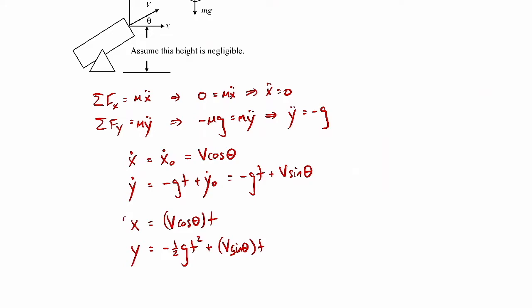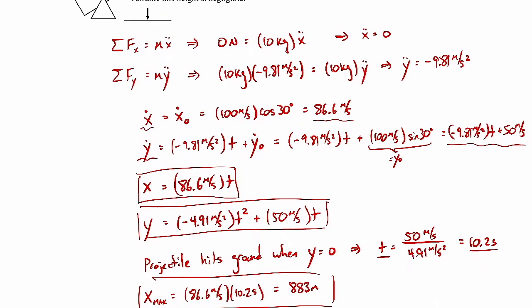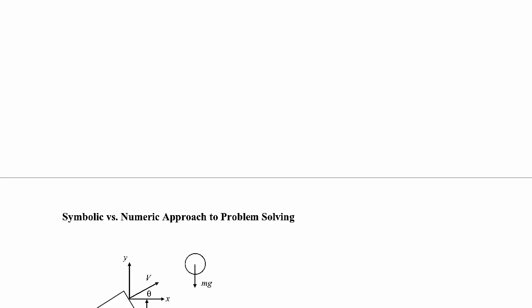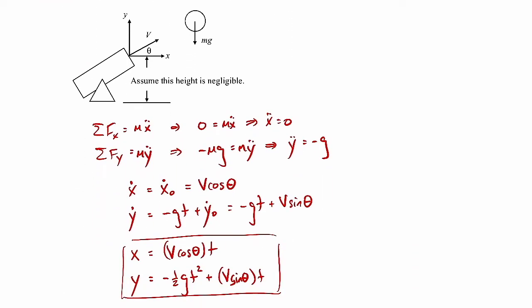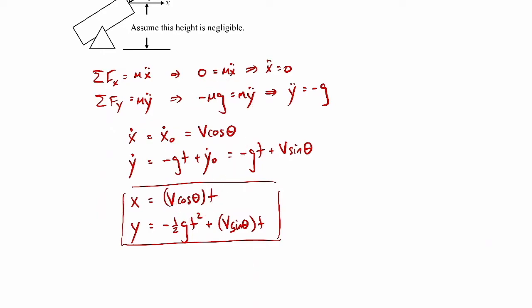These are our trajectory equations. Notice I didn't have to write nearly as much as in the numerical approach. With symbols there are far fewer numbers to keep track of, making the process much simpler.